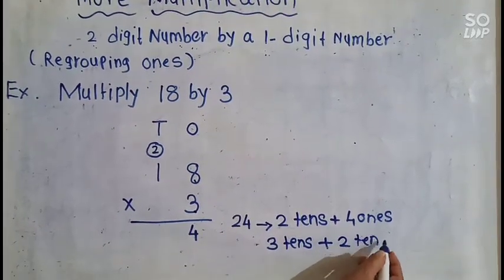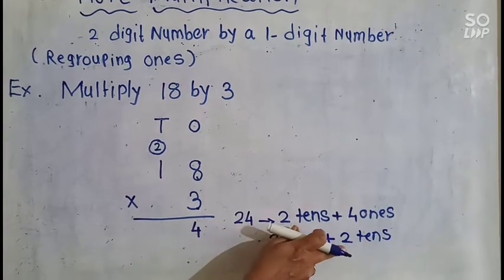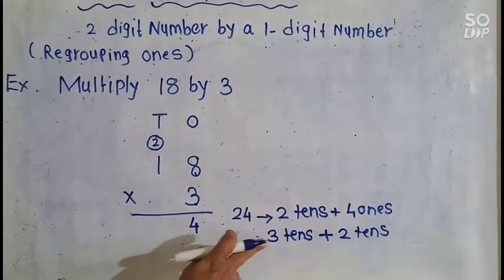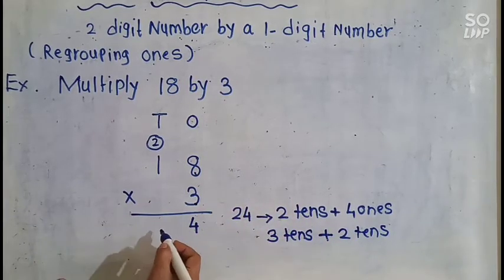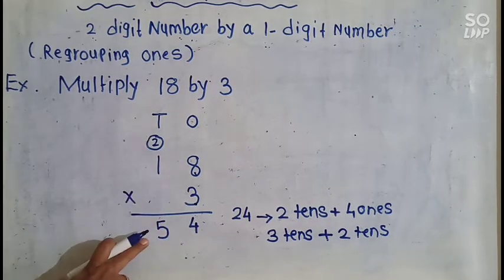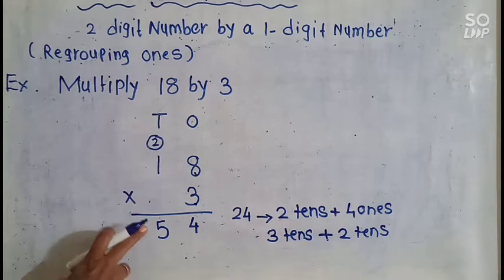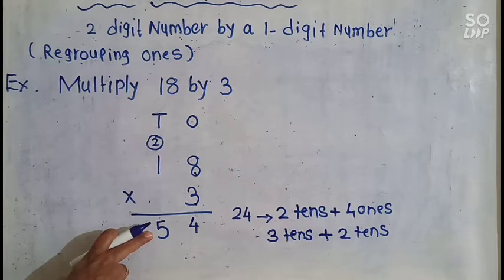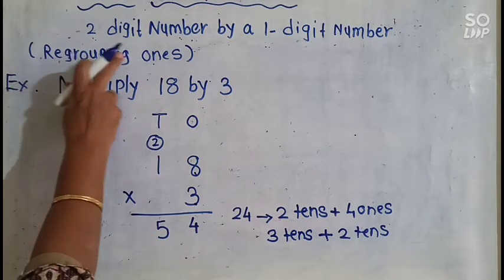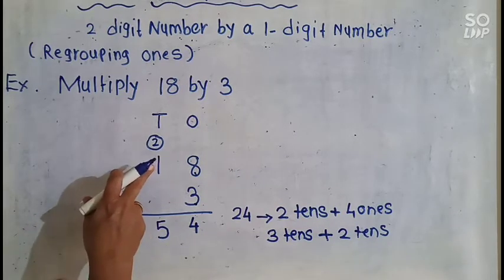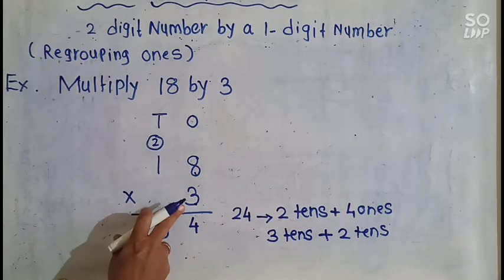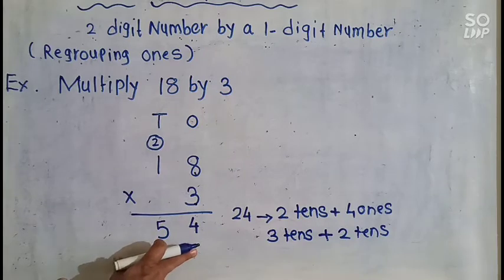Tell me: 3 tens plus 2 tens — how many tens? 3, 4, and 5. So these 5 tens will come here in the 10s column. This is the 2-digit number by a 1-digit number multiplication with regrouping 1s. The answer is 18 × 3 = 54.